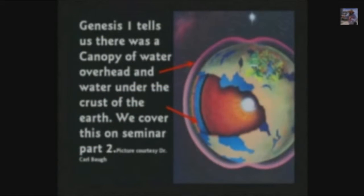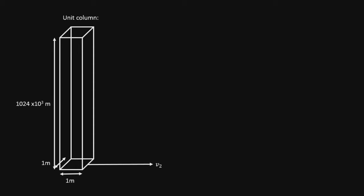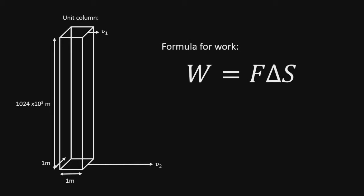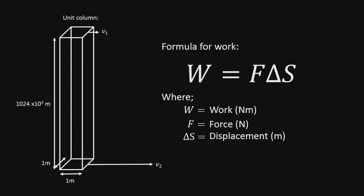However, now the canopy is above the Earth and is orbiting the planet, and this raises problems of its own. Since the water is still liquid, it will undergo some frictional heating. The water at the base of the canopy, being at a lower orbit, will have a greater tangential velocity than the water at the top of the canopy. Therefore, more work is being done on the water at a lower orbit than the water at a higher orbit. This energy difference will be dissipated as frictional heat.